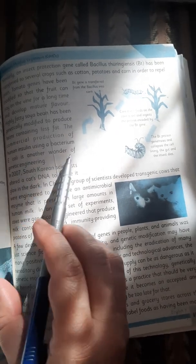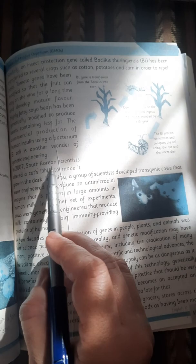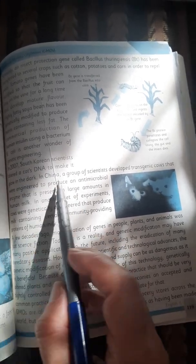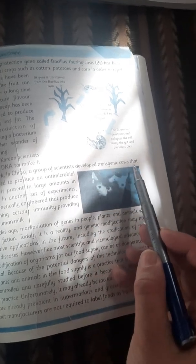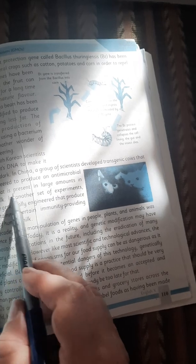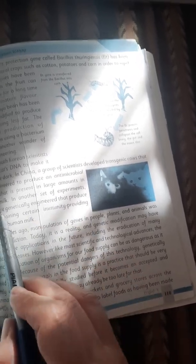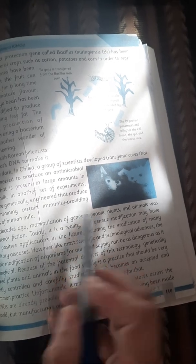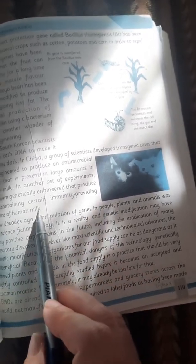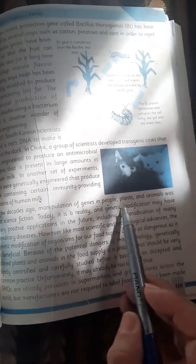In 2007, South Korean scientists altered a cat's DNA to make it glow in the dark. In China, a group of scientists developed transgenic cows that were engineered to produce an antimicrobial enzyme that is present in large amounts in human milk. In another set of experiments, cows were genetically engineered that produce milk containing certain immunity-providing proteins of human milk.